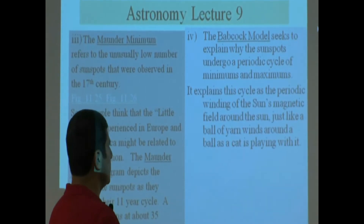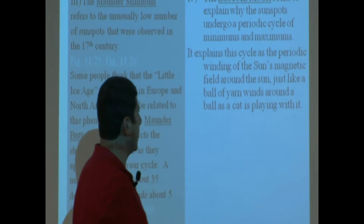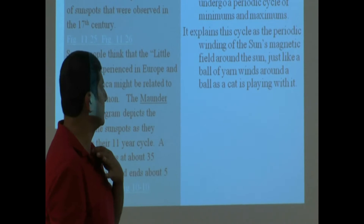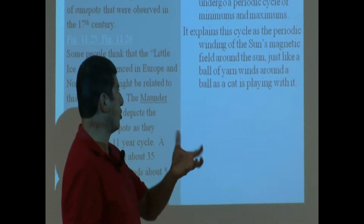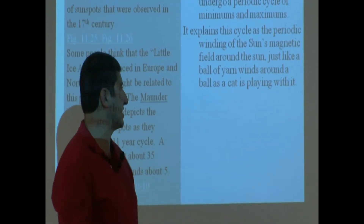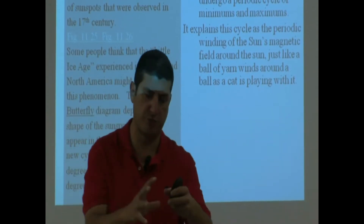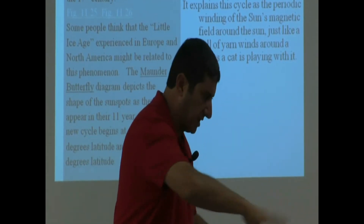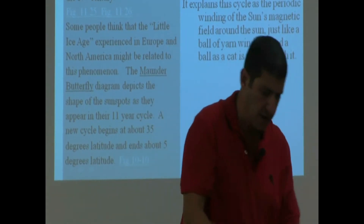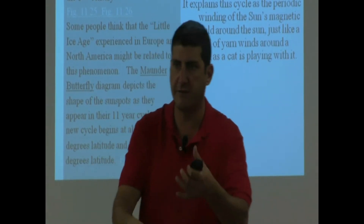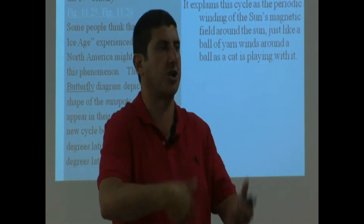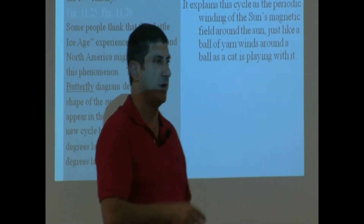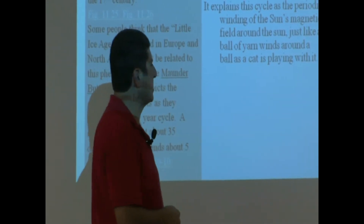Here is his answer. He explains this cycle as the periodic winding of the sun's magnetic field around the sun, just like a ball of yarn winds around the ball as a cat is playing with it. Imagine there's a ball of yarn, kind of loose, and then a cat starts rolling it — the yarn winds itself up on the ball and then starts unwinding. Then winds itself, then unwinds, then winds and unwinds. That's kind of what's going on with the sun's magnetic field.